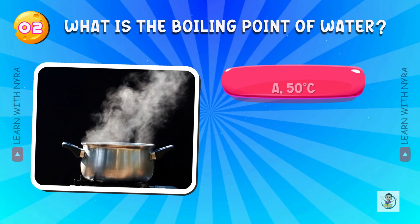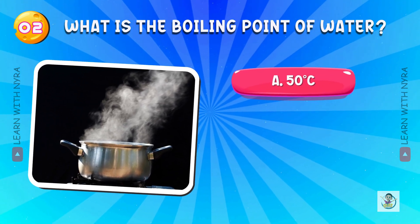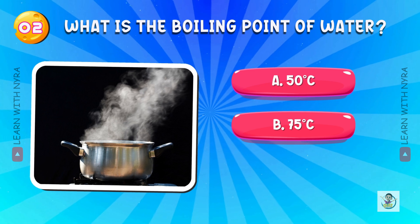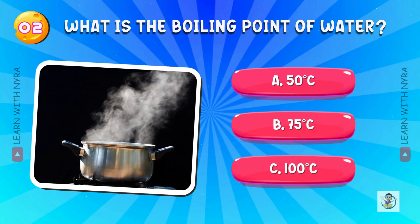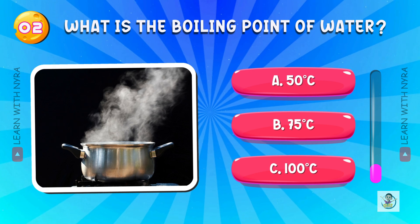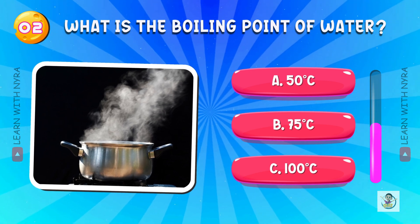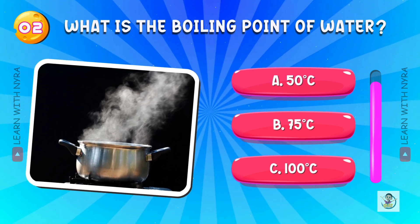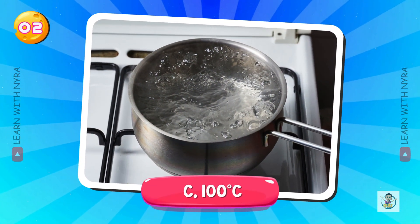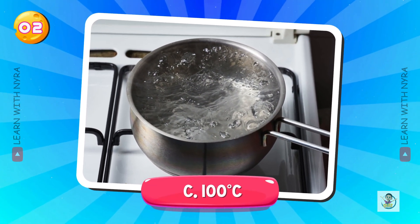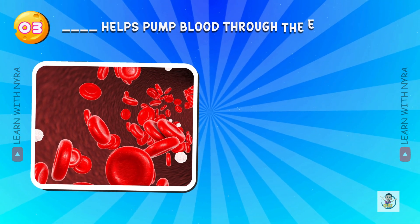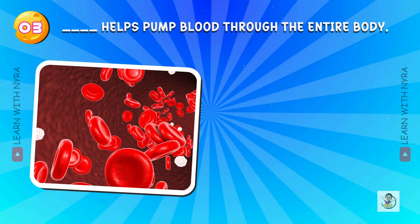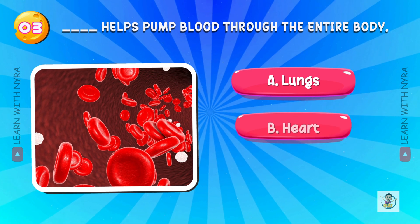What is the boiling point of water? A. 50 degrees Celsius, B. 75 degrees Celsius, C. 100 degrees Celsius. And the answer is C. 100 degrees Celsius.